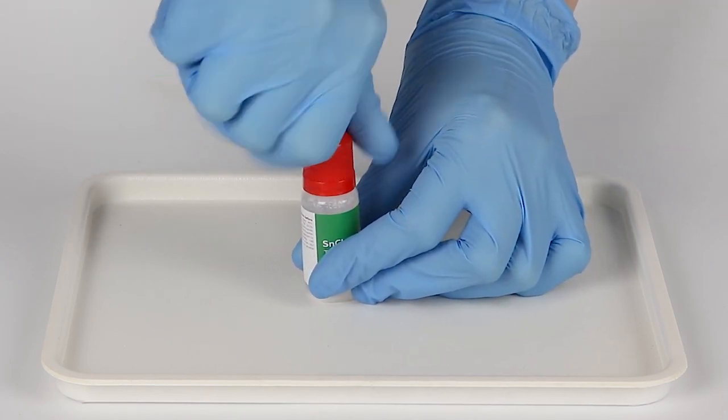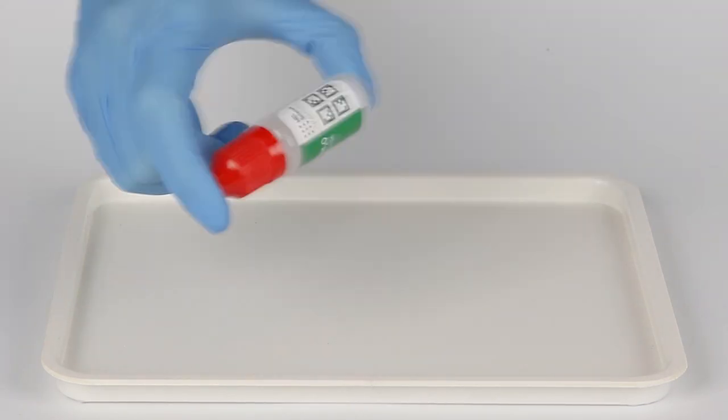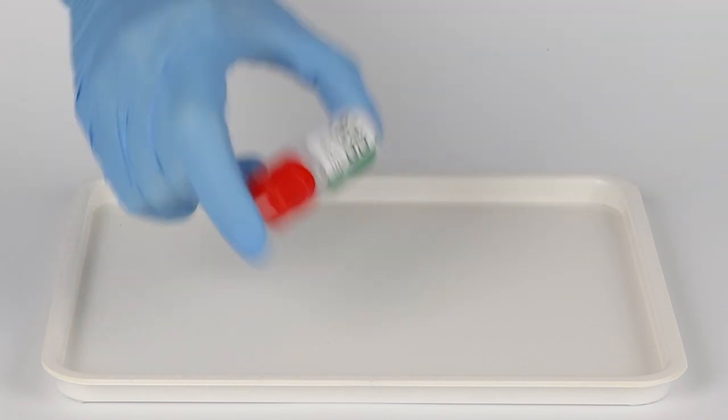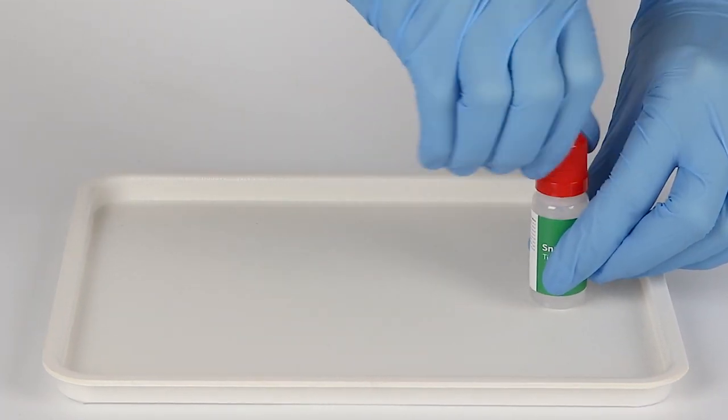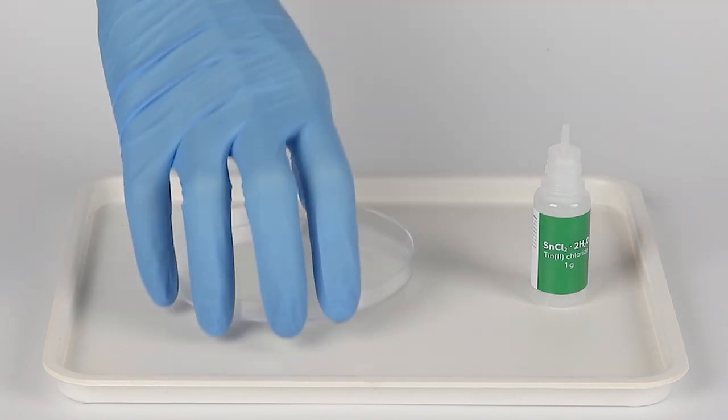As an alternative, you can use the white cap from the bottle of sodium hydrogen sulfate solution. Shake the bottle well to mix the contents. Then pour everything into the petri dish.